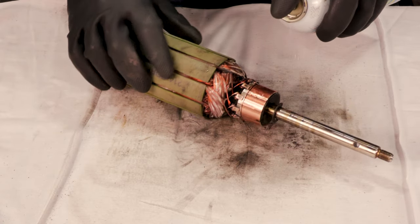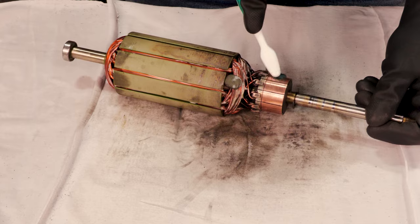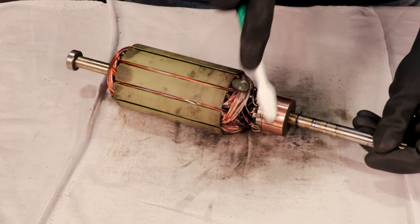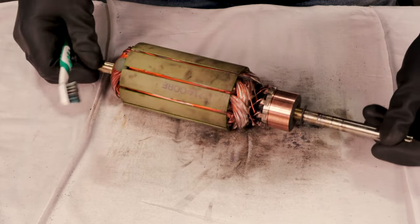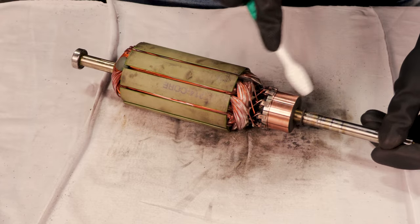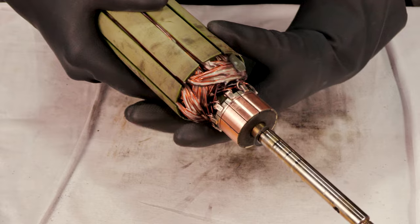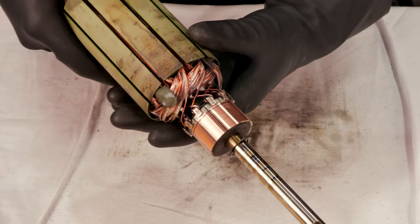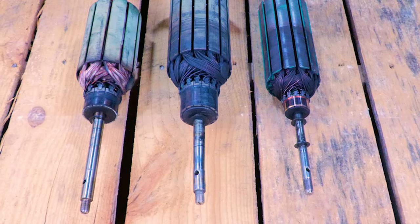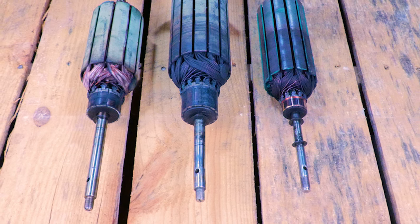Next, you can give it a final spray with contact cleaner to remove any remaining debris. And once you do that, you are done. Your commutator should look more like this. Here is a before and after of three different sized armatures.